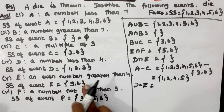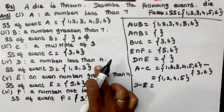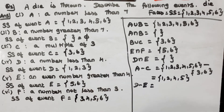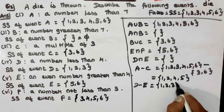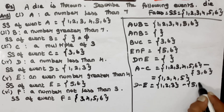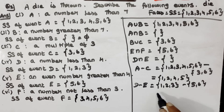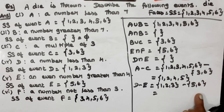D and E give us 1, 2, 3, 5, 6. Now look: 5 and 6 are here.